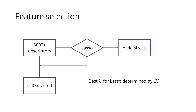3000 chemical descriptors are clearly too many for machine learning, so a feature selection is conducted in advance. A Lasso regression model is trained using the chemical descriptors with yield stress as a response. Around 20 descriptors with non-zero coefficients are selected. Their physical meanings are also investigated, which is beyond this project.